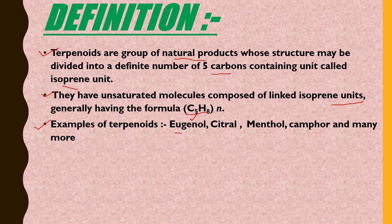Examples of terpenoids include Eugenol, which is found in Tulsi, as well as Citrus compounds, Menthol, and Camphor, among many others.